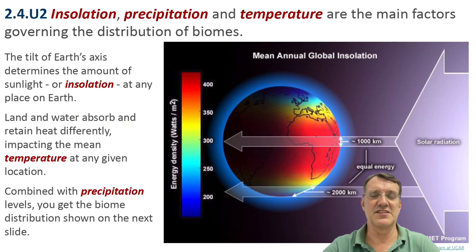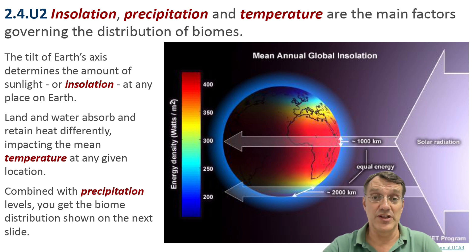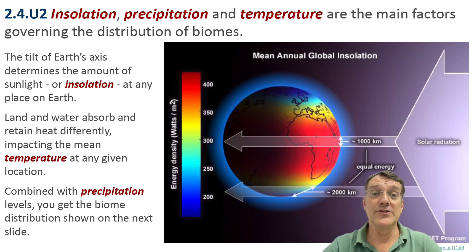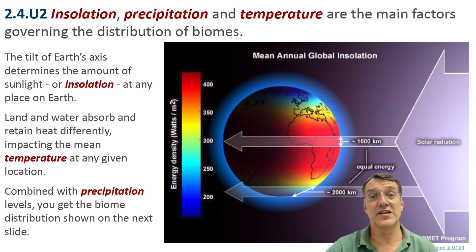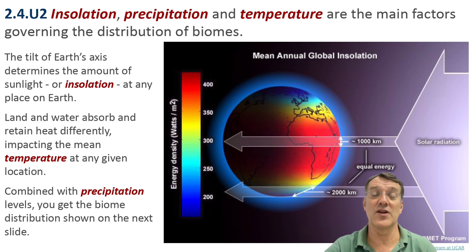Let's examine what creates these biome distributions. Insolation, which is incoming sunlight, precipitation, and temperature are the main factors governing where biomes occur. Insolation refers to the amount of solar radiation reaching Earth's surface and varies by latitude due to Earth's tilt. This difference in insolation, combined with differences in how land and water absorb heat, creates the temperature patterns we observe globally.